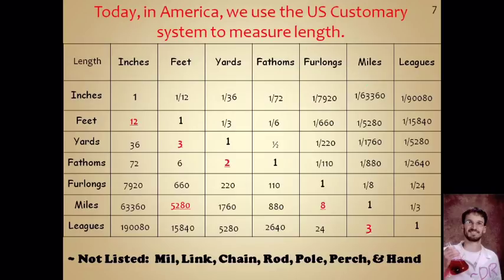These are the commonly used measurements in the United States. If we're going to use the US system in class, we'll need to know how to convert from one to another — for example, yards per hour to furlongs per hour. The more uncommonly used measurements include the mill, the link, the chain, the rod, the pole, the perch, and the hand. My favorite is the hand — it's the only one I've ever actually measured something in myself. Look up what a few of these are used for; it would be a fun challenge.